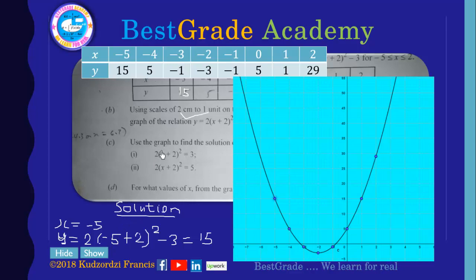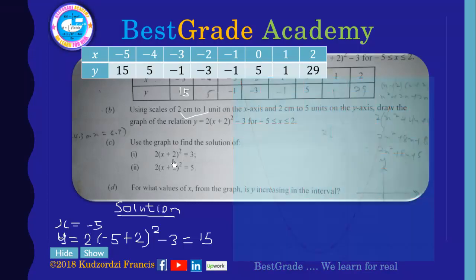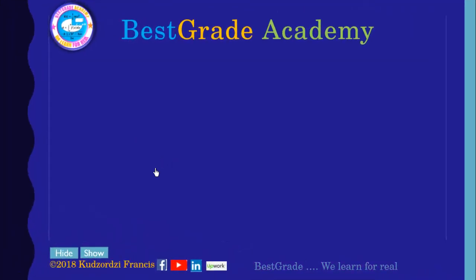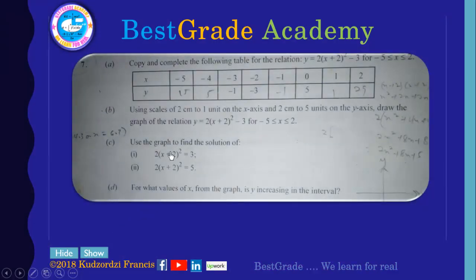Then the c part: use the graph to find a solution of this. So this first one that I'm talking about over here is just the same as 2 into x plus 2 all squared minus 3 is equal to 0. So that is where the graph meets the y-axis because this is the graph that we have drawn. So where it meets the y-axis, it's equal to 0 over there.